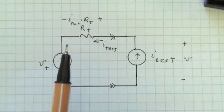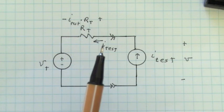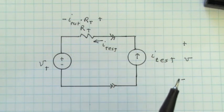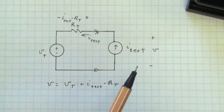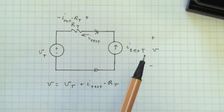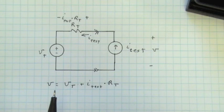So the relationship between the voltage at the output terminals and the test current will be that V is equal to V sub T plus I test times R sub T.